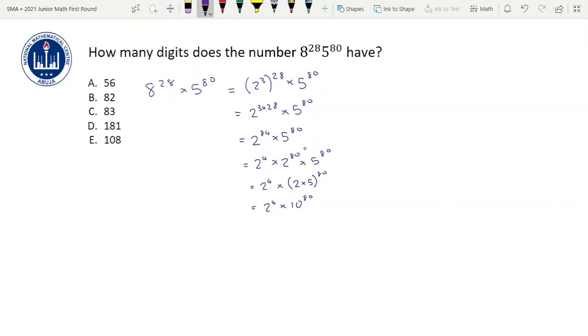Okay so this is the same as the number that we started with, so 2 to the power 4 times 2 to the power 80 is the same as 8 to the power 28 times 5 to the power 80. And what we're going to notice here is that, let's write this as 16 times 10 to the power 80.